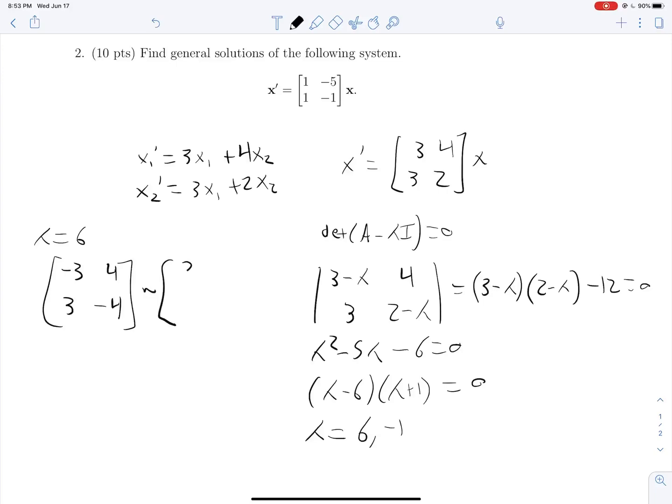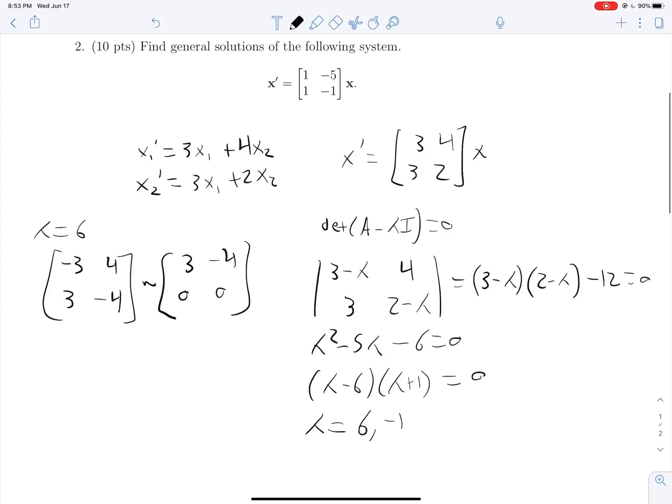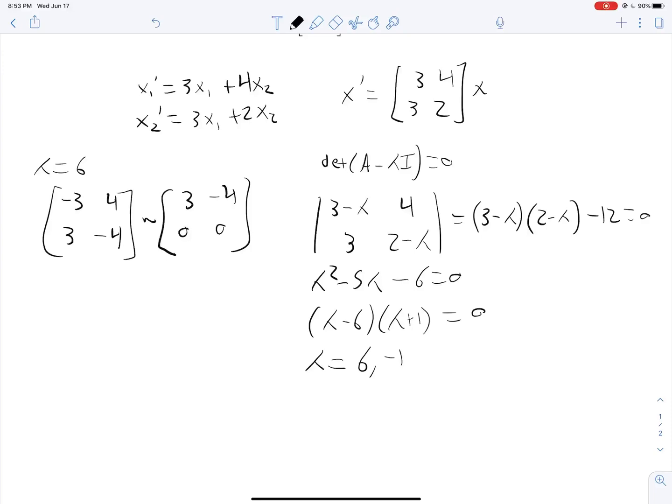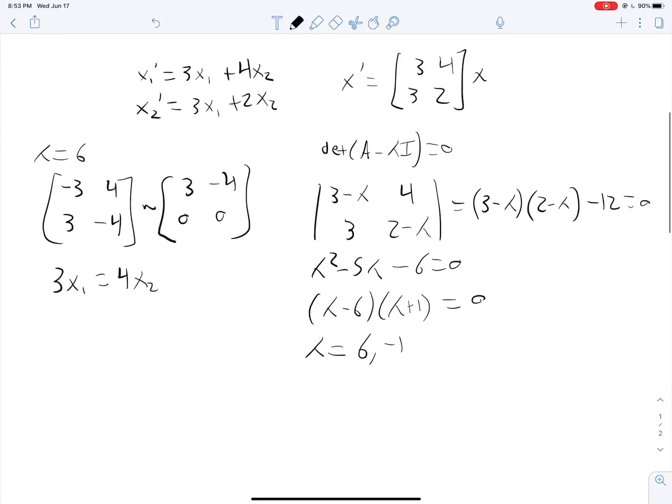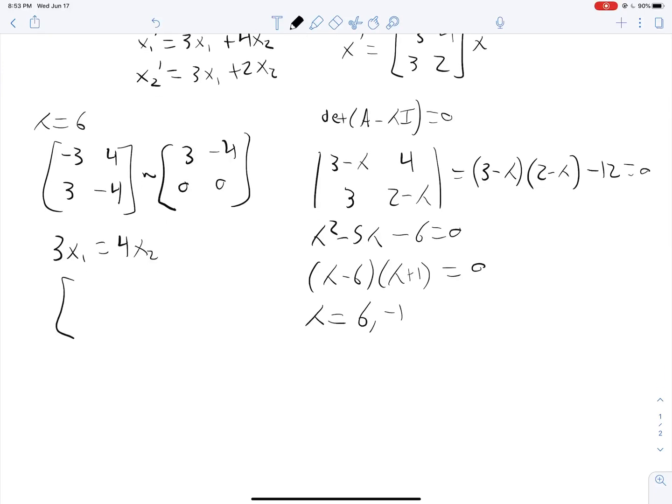So simplifying this, we get 3, negative 4, 0, 0, just using some elementary row operations. And we can extract this equation here because we can set this equal to 0 and see that this is 3x1 minus 4x2 is equal to 0. 3x1 is equal to 4x2. And the vector that we get out of that is 4, 3. There is our first eigenvector there.